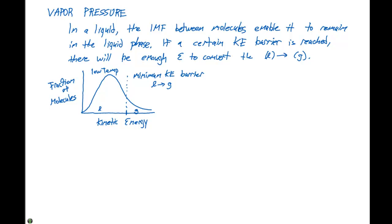If we heat this, here's our higher temperature curve. Over here on the right-hand side of this dotted line is our minimum kinetic energy barrier for the molecules to go from a liquid to a gas. We can see that there's a much greater percentage of these molecules that are in the gaseous state. At the low temperature, we only have a small fraction of molecules in the gaseous state, but at a higher temperature, we additionally have these extra molecules in the gaseous state.